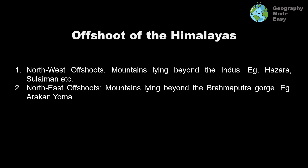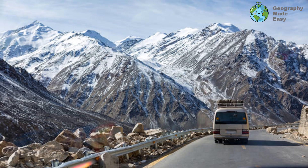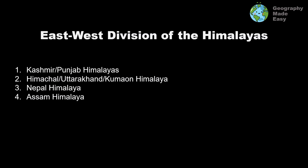There are certain offshoots of the Himalayas which lie beyond the main Himalayan mountain ranges. We have the Northwest offshoots lying beyond the Indus, with the Hazara and Suleiman ranges in the west, and the Northeast offshoots beyond the Brahmaputra, with the Arakan Yoma in the east. These are also called the Trans-Himalayas.